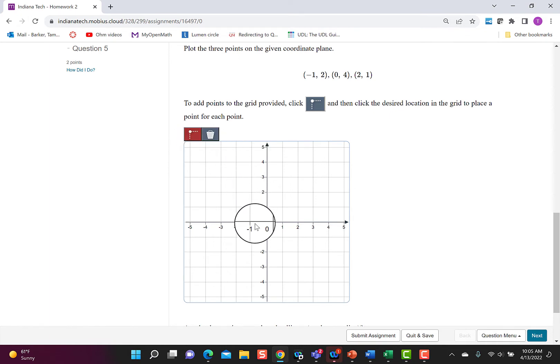So I'm going to start with negative 1, 2. So I go negative 1 up to 2 and I click. Now I can see a point there. When I want to click the next point I go back and I click and make that button turn red again, and then I look for 0, 4 and I click.